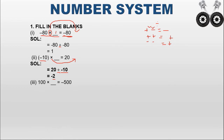The third problem is: 100 into dash equals minus 500. The operator is multiplication, which becomes division on the RHS. So minus 500 divided by 100 — we write plus 100 as it is. The zeros cancel: 500 divided by 100 gives 5. Minus divided by plus means different signs, so the answer is minus 5. Therefore, 100 into minus 5 equals minus 500.